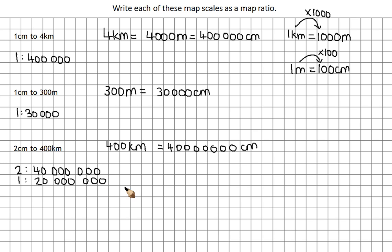Now we can compare the maps. This one is going to be the most zoomed in version, because 1 cm is only 30,000 cm. This is going to be the next closest one. And this is going to be the map from furthest away, so this is going to show the largest area. You can use these scales to compare whether your maps are a zoomed in version of a local area, or a zoomed out version of a city, country, or even further out. That's why these map ratios are used — because you can easily compare between different maps to see which is more accurate and which is more zoomed in.